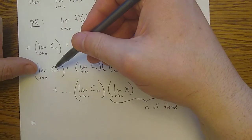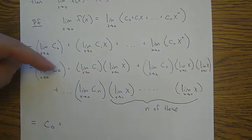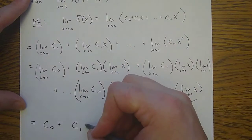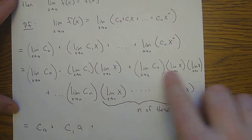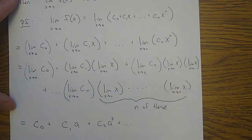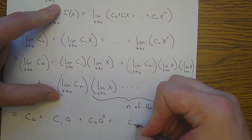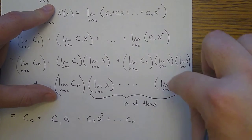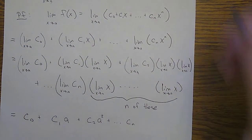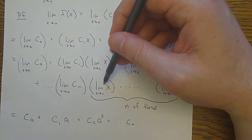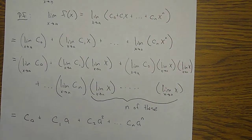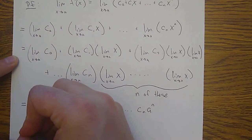Now I'm just using my rules. The limit of any constant is just that constant, so the limit of c0 is c0, the limit of c1 is c1. The limit of x as x goes to a is a. Continuing: this would be c2, then a times a gives a squared. All the way to the last one — cn times a to the n, because I have x to the n, so that's a times a times a, n times, which is a to the n.